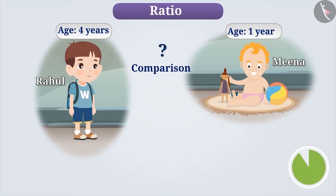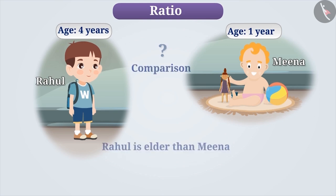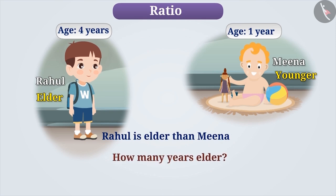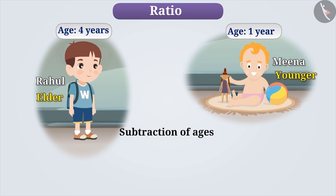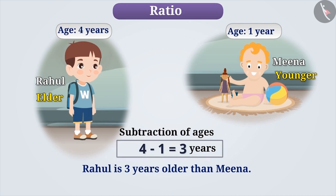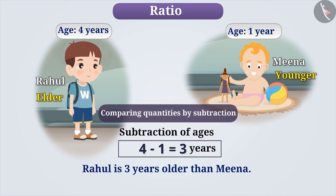Think for a while. In order to compare their ages, we can say that Rahul is elder to Meena. This kind of statement tells us about the quantity being greater or smaller, but it cannot give us a clear idea about how many years Rahul is elder to Meena. If we subtract their ages, we get 3. This shows that the difference between their ages is 3 years. Therefore, we can say that Rahul is 3 years older than Meena. This method of comparison is called comparing quantities by subtraction.